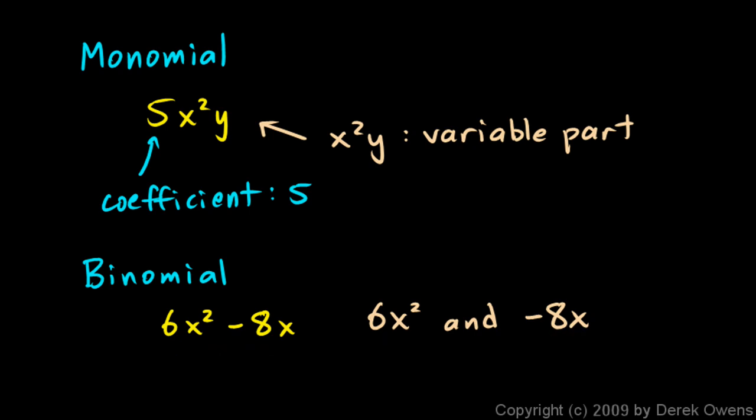A trinomial - tri means three - is a polynomial with three terms. As an example, x squared minus 8x plus 15 is a trinomial. The three terms are the x squared, the negative 8x, and the 15. Don't forget that the negative sign is part of the term.